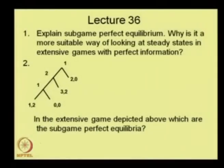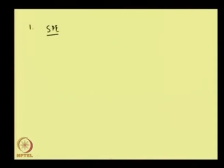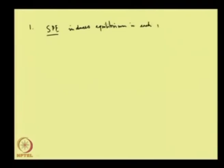Subgame perfect equilibrium — why is it a more suitable way of looking at steady state in extensive games with perfect information? Subgame perfect equilibrium essentially means that it induces equilibrium in each possible subgame of the entire game.